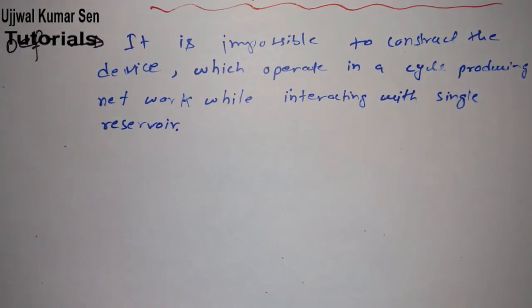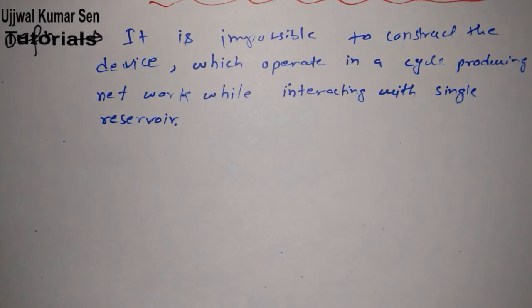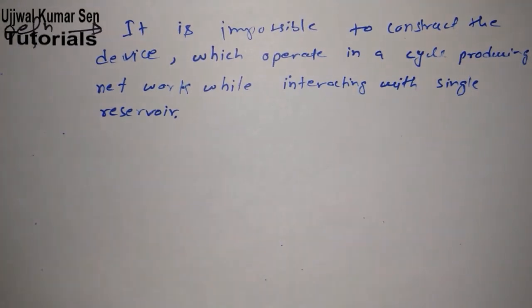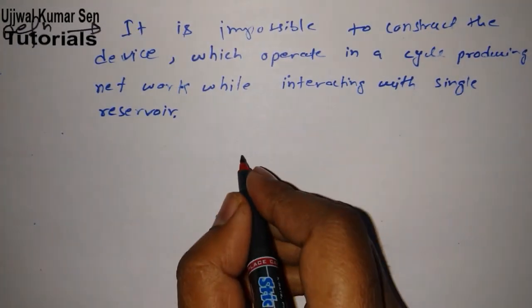So what is basically the concept of it? It is impossible to construct a device with one reservoir. How can we understand from a diagram? Let's go for it.